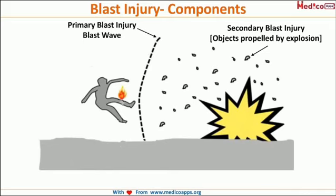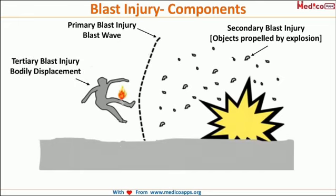The second type is secondary blast injury, caused by objects propelled by the explosion — sharp objects, tables, or other flying objects. As mentioned, missiles are part of the bomb; certain terrorists will put sharp objects like nails inside the bomb to increase secondary injury. Those sharp objects cause much more secondary injury.